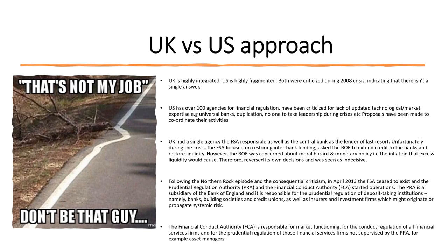To finish, a brief look at the UK's integrated approach versus the US's more fragmented approach. The UK is highly integrated; the US is highly fragmented. But both approaches kind of failed during the 2008 crisis, indicating there really isn't a single answer. The US has over 100 agencies for financial regulation and has been criticised for lack of updated technology and market expertise, hasn't adapted to the evolution of universal banks, and there's a lot of duplication. Despite the duplication, no one agency took leadership during the crisis, and proposals have been made to try to find an overall coordinating body.